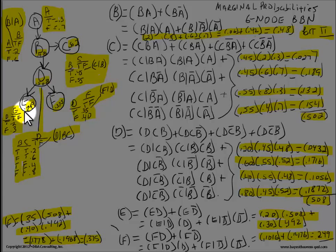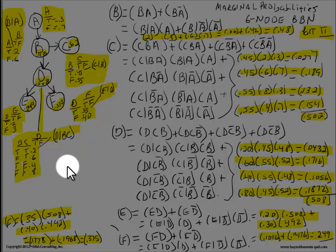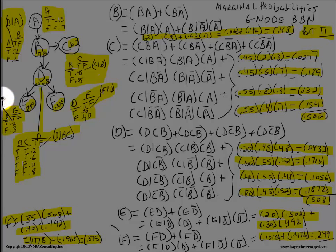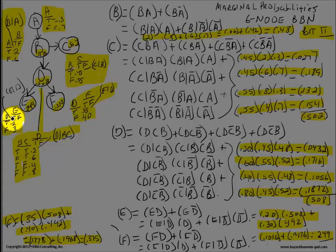For E, the probability of E given D is 0.2, and the probability of E given not-D is 0.3.